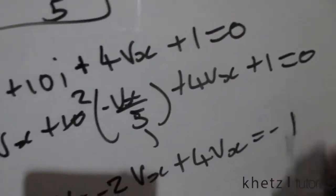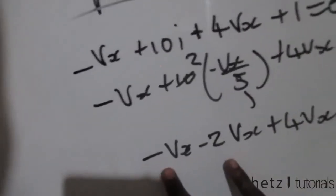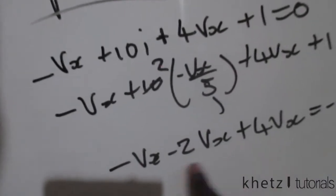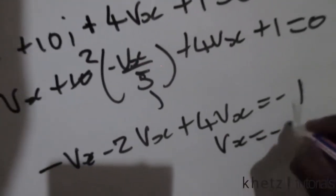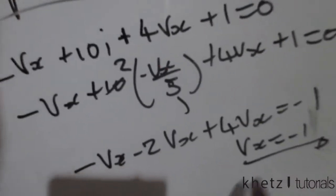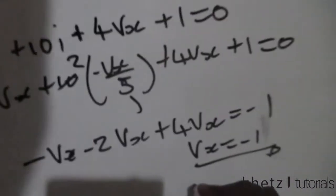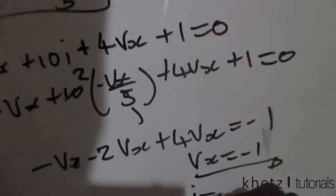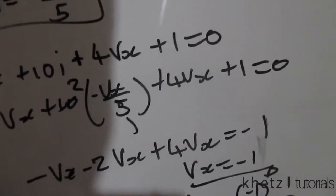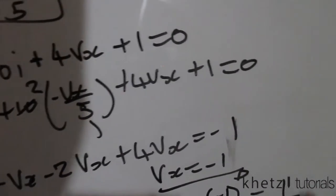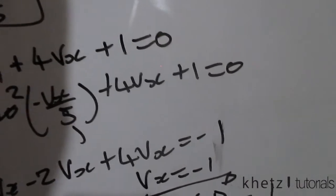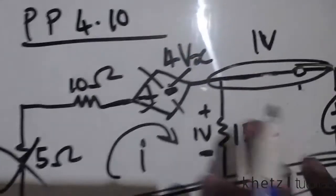On this side that is negative 3vx, so 4vx minus 3vx gives 1 × vx, which means vx equals negative 1. Substituting vx back into i: i equals negative(negative 1) divided by 5, therefore i equals 1/5.